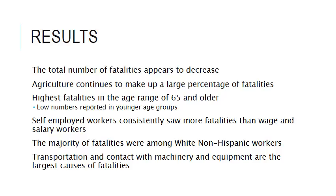The results of this study are as follows. The total number of fatalities due to injuries and illnesses in the agricultural sector appears to decrease from 2005 to 2014. Agriculture continues to make up a large percentage of fatalities in all industries throughout this time period. The number of fatalities for the age group of 65 and older is much higher than any other age group. Low numbers reported in younger age groups could be partially due to underreporting in children. Self-employed workers consistently saw more fatalities than wage and salary workers. Transportation and contact with machinery and equipment were the largest causes of fatalities from 2005 to 2014.